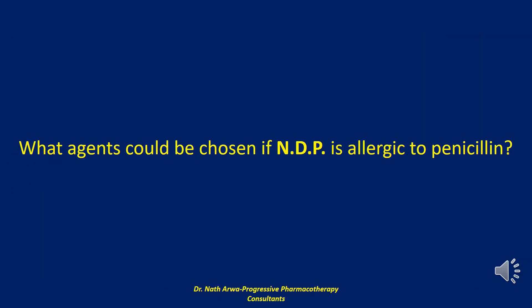The next question reads: what agents could be chosen if NDP is allergic to penicillin? Clindamycin could be chosen for patients with a documented history of penicillin or cephalosporin allergy. In certain geographic areas, group A streptococci macrolide resistance approaches 15% to 20%, decreasing the potential value of this agent. Clindamycin is superior to macrolides with respect to group A streptococcal coverage. However, it causes diarrhea in 20% of patients and is one of the main agents responsible for antibiotic-associated colitis.